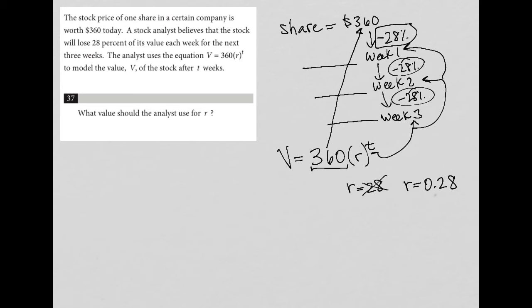Second of all, by replacing R with 0.28, then I would be saying 28% of the 360. That's not actually what a decrease of 28% means, right? Because it's saying that if you start out with 100% of something, in this case, $360 share price, if you decrease that by 28%, what you're left with is 72% of the original.